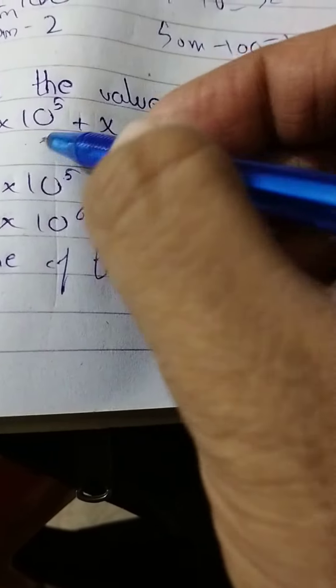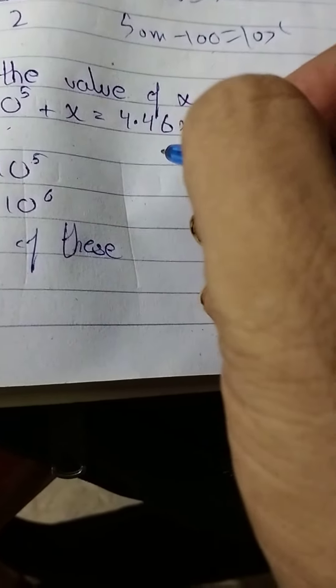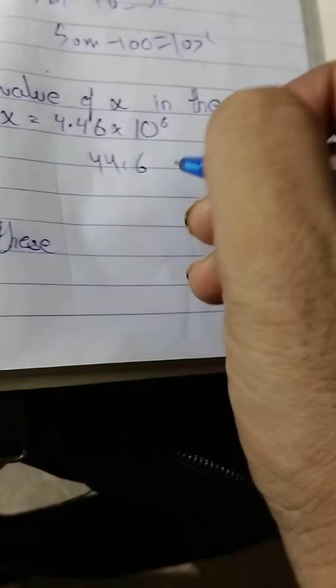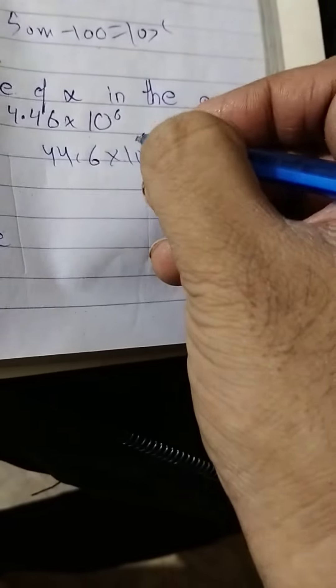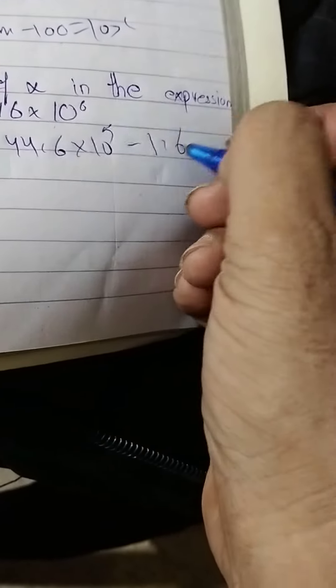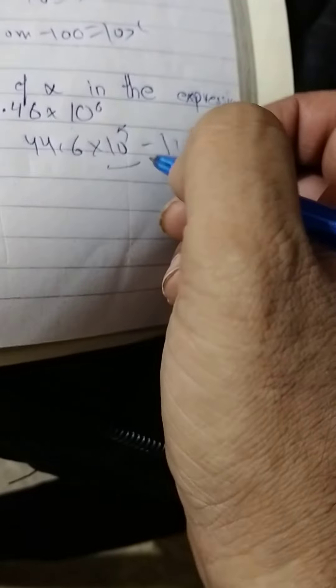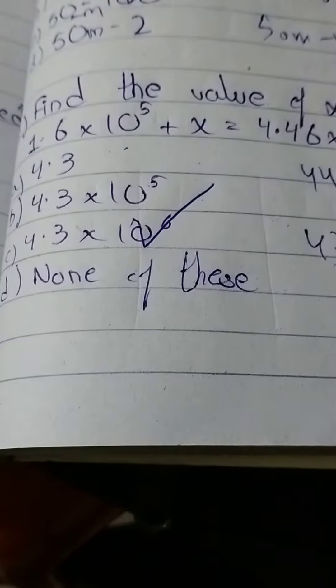I'll write this one. 1.6 into 10 to power 5. 10 to 5 common. 4.6. 1.6 minus, so if you're going to minus 1, then you can write this one: 0.3 into 10 to power 5. So you can write this one: 4.5 into 10 to power 6.